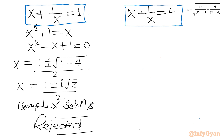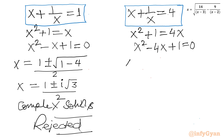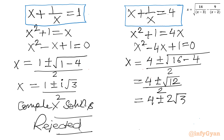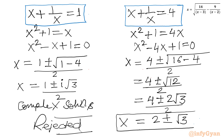Now the second equation: x plus 1 over x equals 4. Multiplying both sides by x gives x² minus 4x plus 1 equals 0. Applying the quadratic formula: x equals (4 plus or minus the square root of 16 minus 4) over 2, which equals (4 plus or minus √12) over 2, giving 2 plus or minus √3. Both solutions are real and positive.